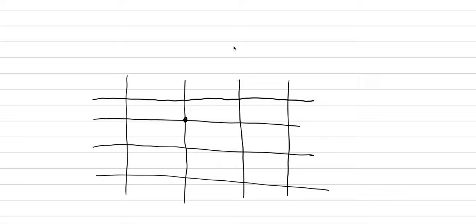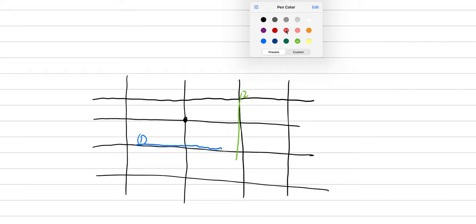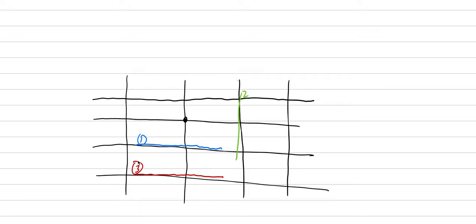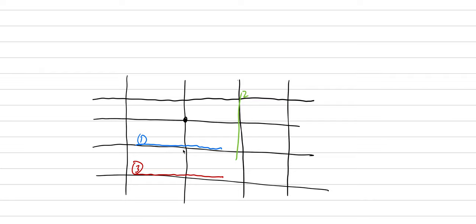Here's our lattice. There's our center point and we're going to put in a series of faces to worry about. We'll put in a face here and label it number one. We'll put in a face here and label it two. Let's do face three down here, and then we'll do a diagonal face in purple that comes across like this — that'll be number four.